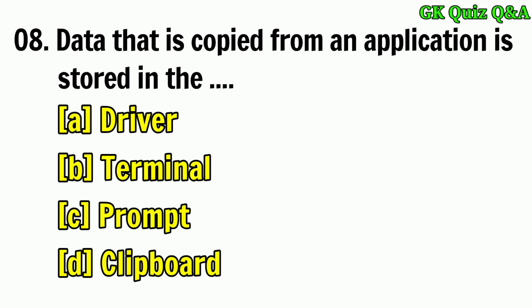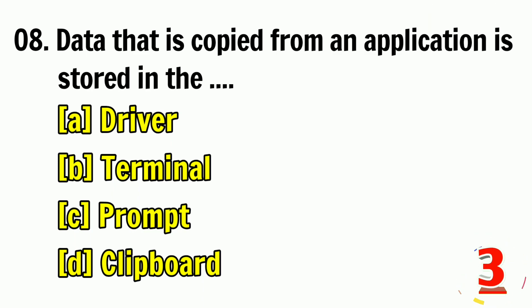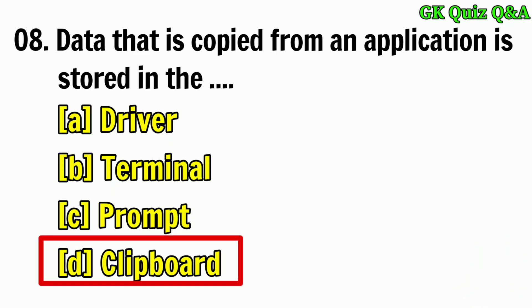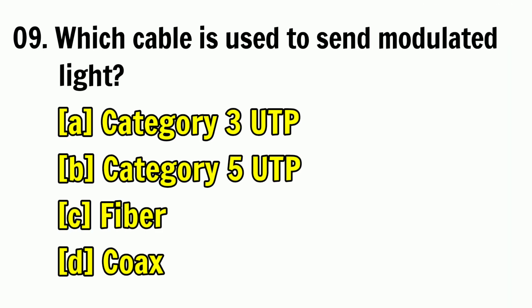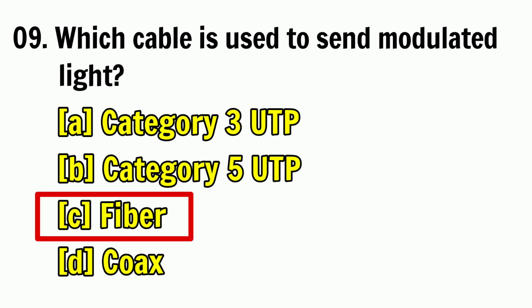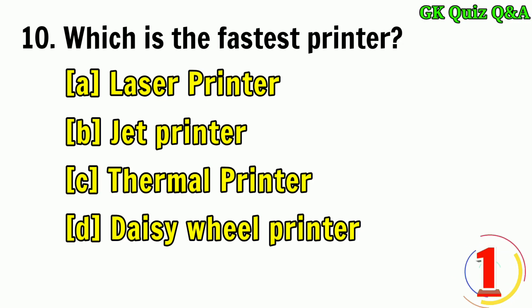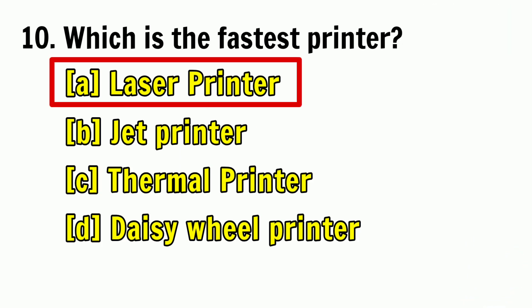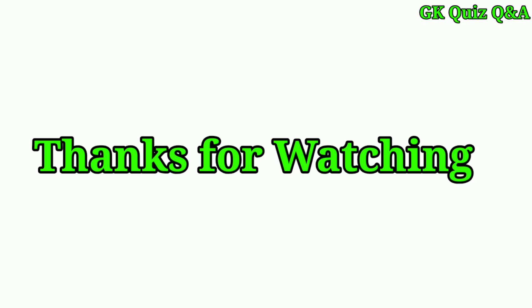Data that is copied from an application is stored in? Answer: D — Clipboard. Which cable is used to send modulated light? Answer: C — Fiber. Which is the fastest printer? Answer: A — Laser printer.